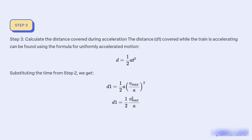Step 3: Calculate the distance covered during acceleration. The distance d1 covered while the train is accelerating can be found using the formula for uniformly accelerated motion: d = ½ a t². Substituting the time from Step 2, we get d1 = ½ (v_max / a)², which simplifies to d1 = v_max² / (2a).